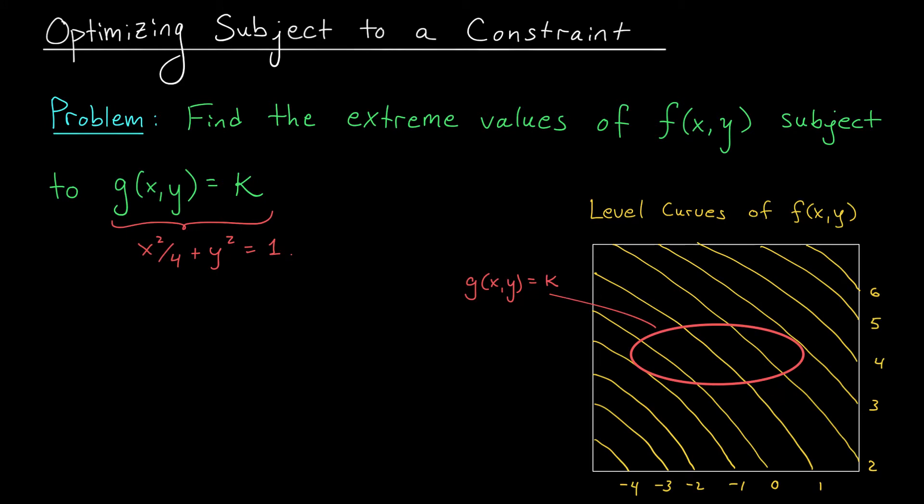So, what do we do? We lower our standards. We can't get a height of 6, but maybe we could get a height of 5. Nope, no such luck. Again, no points on this level curve are going to lie on our constraint curve. So, we continue to lower our standards. And you'll see that something magical happens when we lower our level curve to a height of 3.